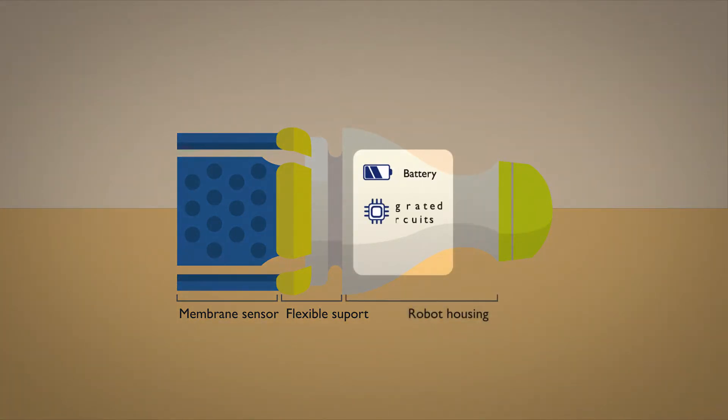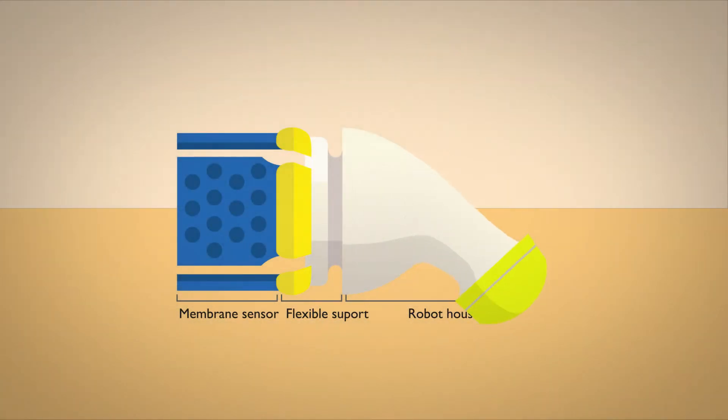The robot housing contains the electronics to make the robot wireless. The housing is made of soft rubber so it can bend to go around the pipe elbows.